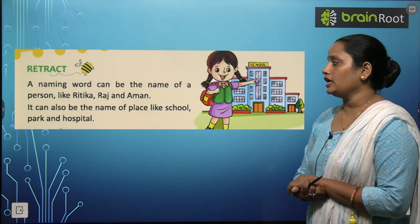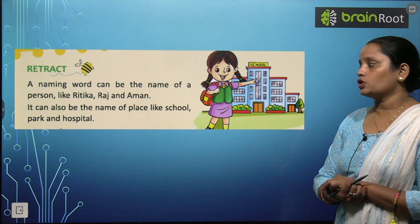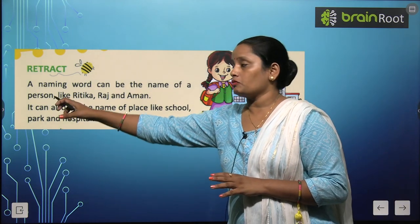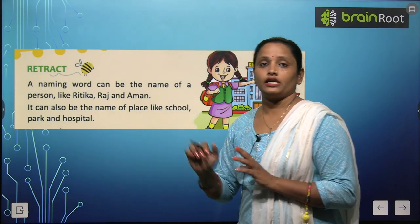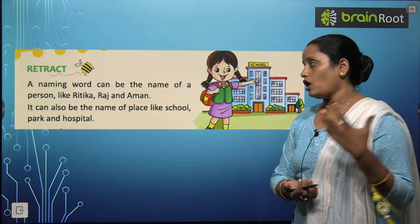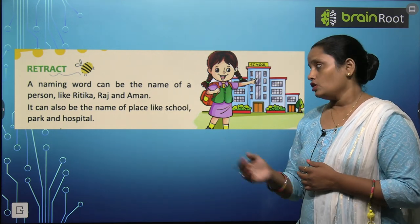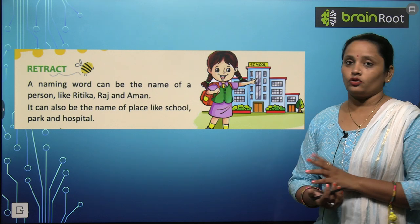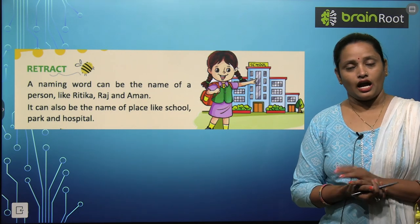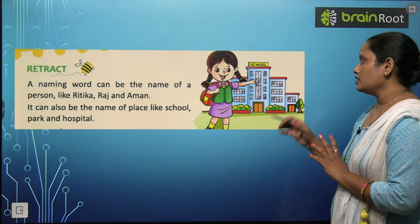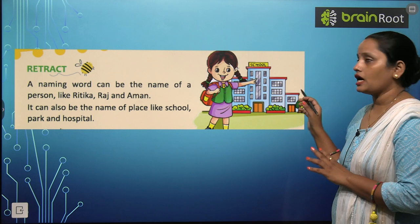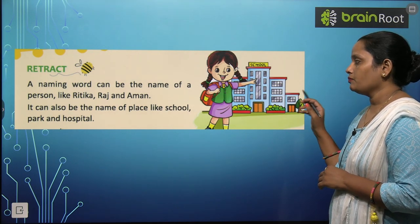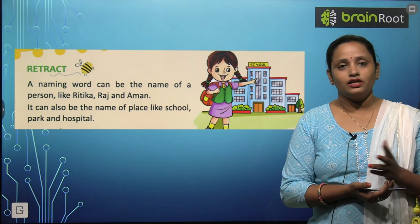It can also be the name of a place, like school, park, hospital, and police station. Toh yeh jitni bhi jagahen hain, unke naam ko bhi naming word kehte hain. Yahan pe Ritika hai — she is a person, and Ritika is also a naming word. Similarly, she is showing us her school. School is a place, aur isi liye school ko bhi yahan naming word bola hai.